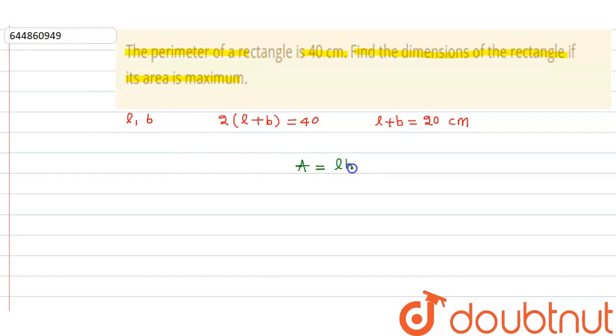l × b. Now what you do is just substitute b as 20 - l from here, so you get l × (20 - l). So this becomes A = 20l - l².